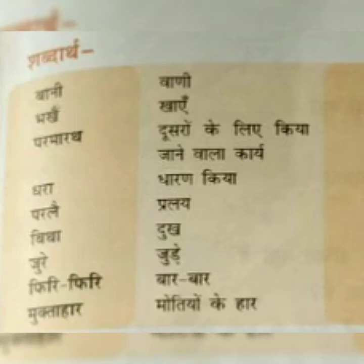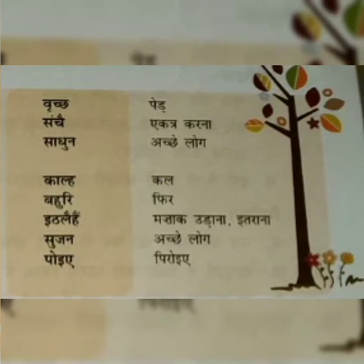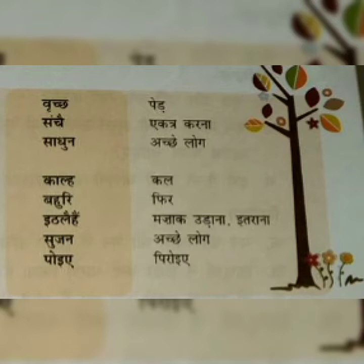Phiri means bar bar, again and again. Mukta haar means motiyon ke haar — pearl's necklace. Brich — the actual word is vriksh, peed, meaning tree. Sanchei means ekatra karna, to collect — the actual word is sanchit karna. Sadhun means sadhu, achhe log — good people, gentleman.